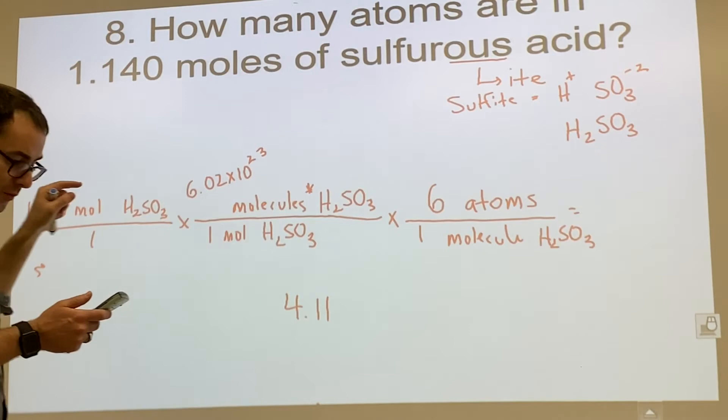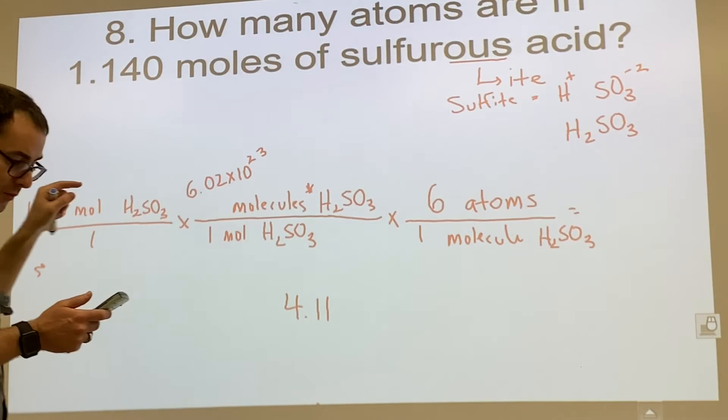So we have four sig figs, right? So 4.118, good. Times 10, so 24. Okay, everybody cool with that?